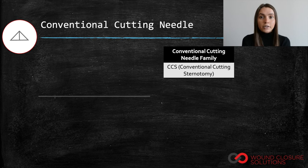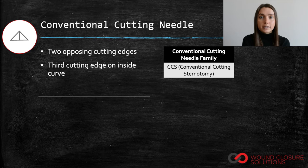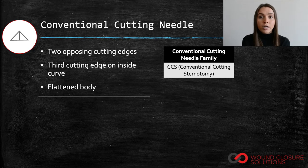Conventional cutting needles have two opposing cutting edges with a third on the inside curve. Though they have triangular cutting tips, these needles have flattened bodies for enhanced stability and ease of penetration.